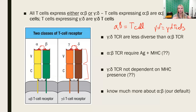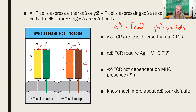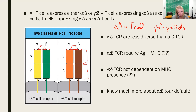Gamma delta T cells are much less diverse than alpha beta T cells — alpha beta T cells have a very wide range of antigen specificity. Antigens are recognized by T cell receptors, but there's more to it: MHC molecules are also needed to allow a T cell to recognize antigen. Gamma delta T cells are what we call MHC independent — they do not need MHC. We know much more about alpha beta T cells, so that will be our default, and we will get deeper into MHC in the next lecture.